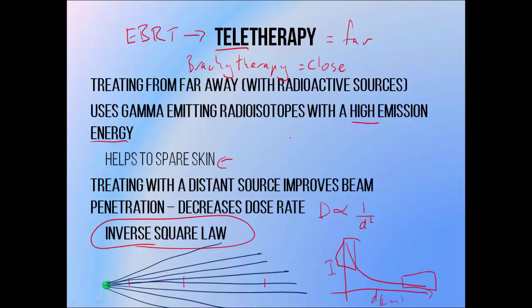You'll often see it written as dose varies with 1 over R squared, with R being the radial distance from the source. This means that if you double your distance, your dose is decreased by a factor of 4. If you triple your distance, your dose is decreased by a factor of 9. If you quadruple your distance, your dose is decreased by a factor of 16, and so on.